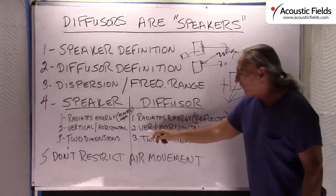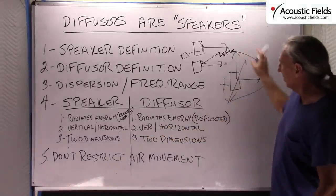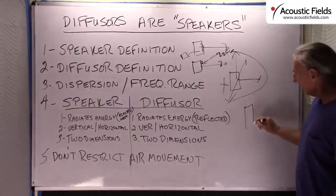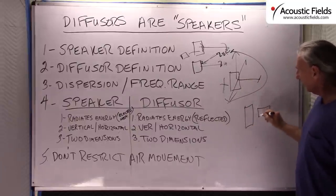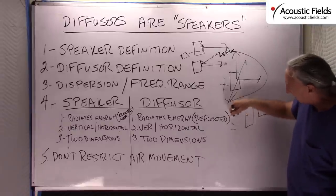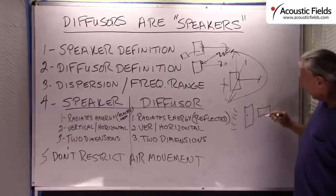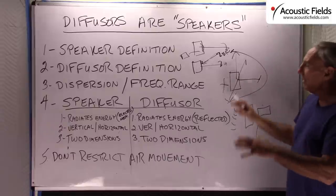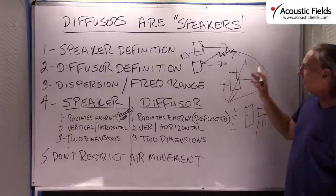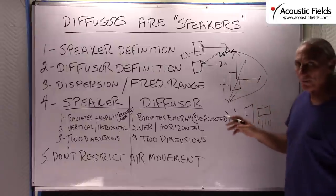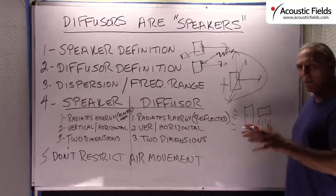You can also achieve the same multi-plane dispersion with diffusion using quadratic diffusion, just based on how you position it. A vertical diffuser will diffuse sound out in a horizontal array, and a horizontal diffuser will diffuse sound out in a vertical array — it's kind of hard to draw. But you can get the same two dimensions of diffusion that you get out of a speaker, though a speaker will give you an additional dimension. The similarities are the same.